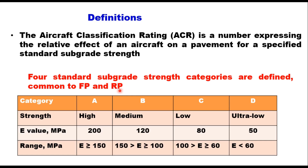The subgrade categories A, B, C, and D are defined based on E value (modulus). High strength corresponds to category A (E ≥ 150 MPa), medium strength is category B (100–150 MPa), low strength is category C (E in the range of 60–100 MPa), and ultra-low strength is category D (E below 60 MPa). The ACR is numerically defined as twice the Derived Single Wheel Load (DSWL) expressed in hundreds of kilograms.